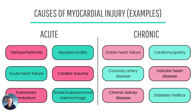There are many different causes of myocardial injury that aren't a myocardial infarction, and we can differentiate them into acute and chronic injury. Acute causes include tachyarrhythmia, myocarditis, acute heart failure, and cardiac trauma — those are all cardiac causes. There are also non-cardiac causes of acute myocardial injury: pulmonary embolism, stroke, and subarachnoid haemorrhage can all cause acute myocardial injury. We don't quite know why, but it does happen.